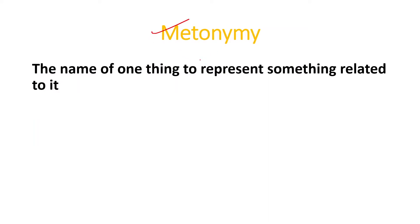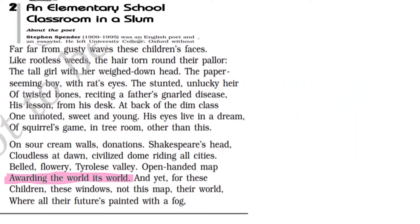Let us check another poetic device: metonymy. Metonymy is when the name of one thing is used to represent something related to it. Look at this example: 'awarding the world its world.' The word 'world' here does not mean the whole world — it means the privileged people. The open-handed map shows their world, not the entire people; slum children are excluded. So this word represents only a particular, privileged class. The poetic device of metonymy is used here.